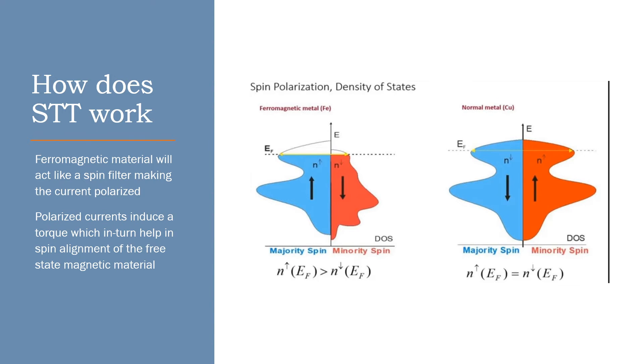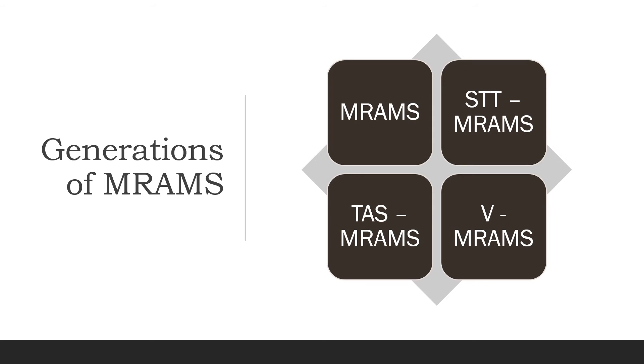So about the generations of MRAMs, there are basically four generations. First being the MRAMs itself, and the second being a troubleshooting of MRAM which is STT-MRAM. The third one being TAS-MRAM and the fourth being V-MRAM.